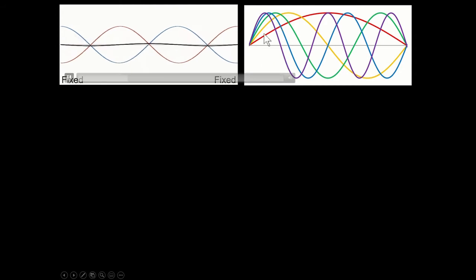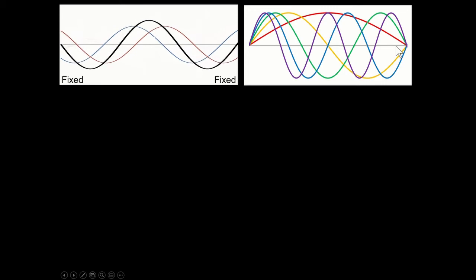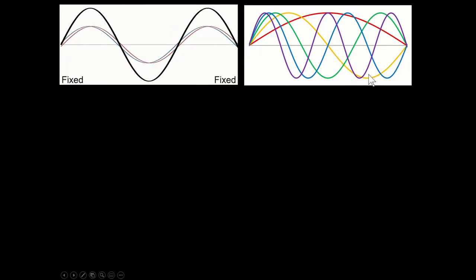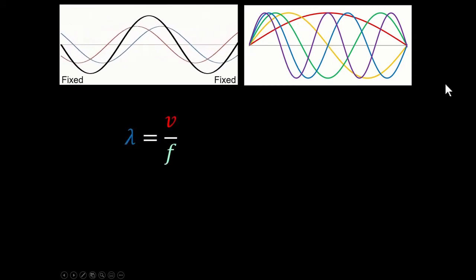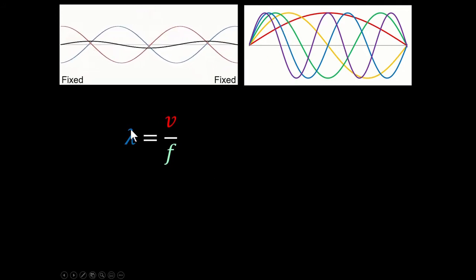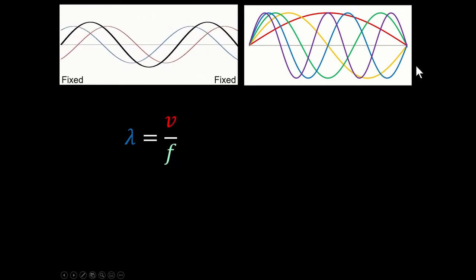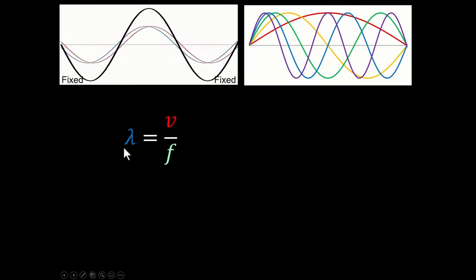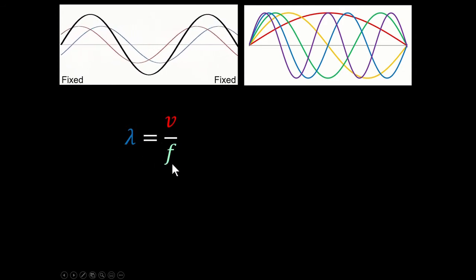This red one is the largest wavelength that would fit — that's called the fundamental frequency, or the first harmonic. The orange one is the second harmonic, or the first overtone. One thing to remember is that wavelength equals the velocity of the waves divided by the frequency, but all those waves travel at the same velocity, so smaller wavelengths correspond to higher frequencies.